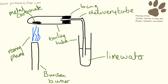When the metal carbonate decomposes, it's going to be producing some carbon dioxide. That is going to go down the delivery tube and then into the lime water. And if carbon dioxide is produced, the lime water will go cloudy.